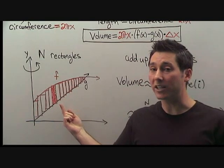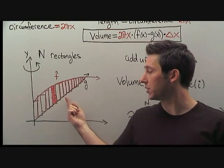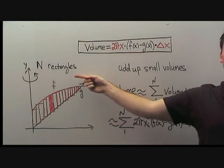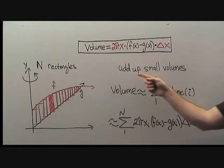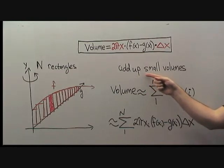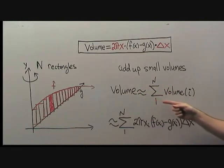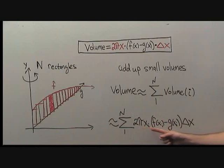That way, we can approximate the total volume by adding up the volume of all the small contributions from each rectangle. Let's start with N rectangles filling up this region. We can add up the small volumes from each rectangle. So our total volume will approximately be the sum from 1 to N of the volume of each piece. That is, the sum from 1 to N of 2π times xi(f(xi) - g(xi))Δx.